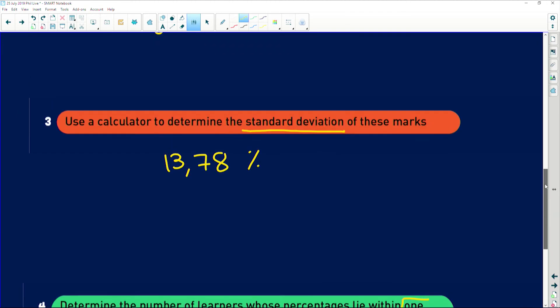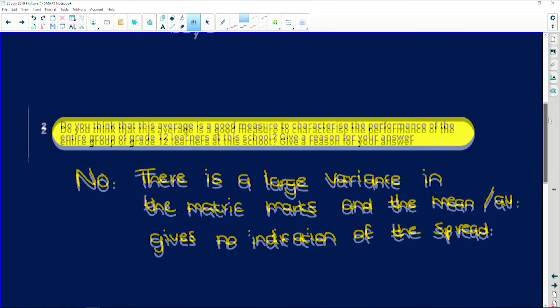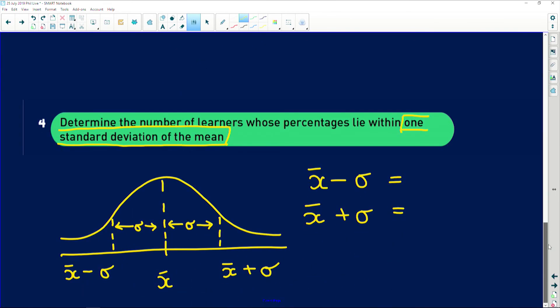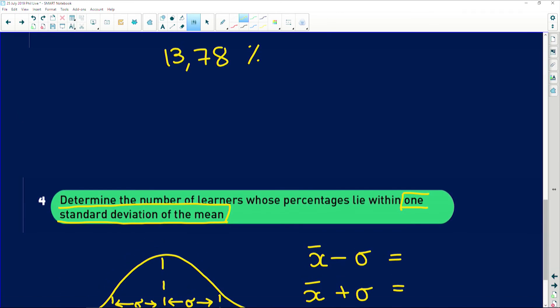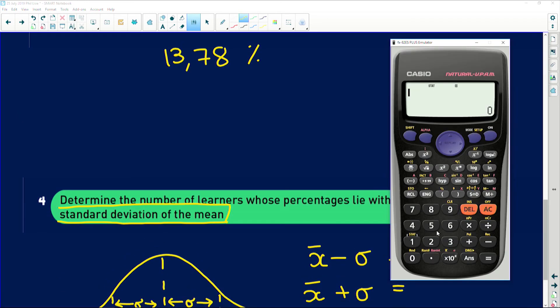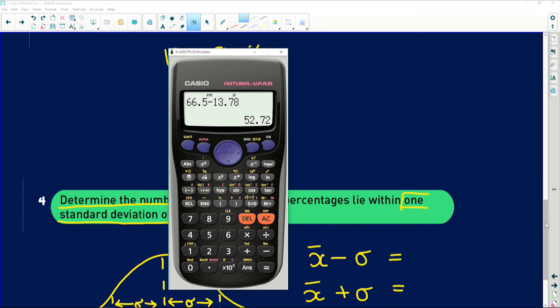Okay. So that's going to give us, we find that the mean was 66.5. So we have 66.5 plus the standard deviation, which is 13.78. I'm going to say minus first. Minus 13.78. And that's going to give us 52.72.